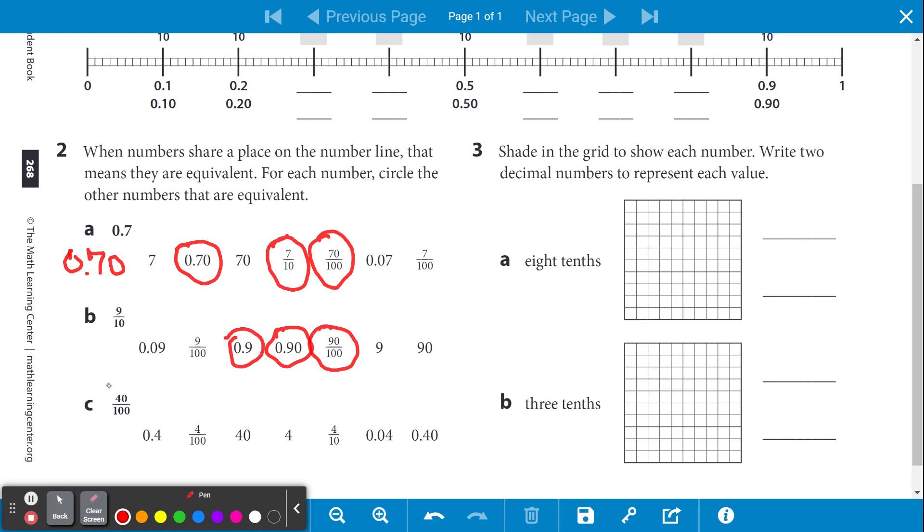C says 40 over 100, which is 40 one hundredths, which is the same thing as 4 tenths and 0.40.